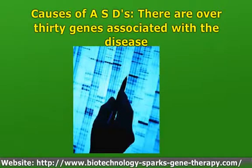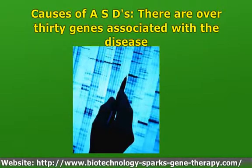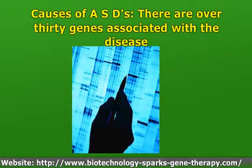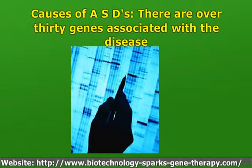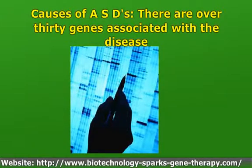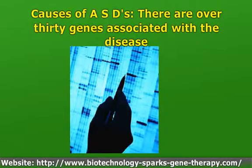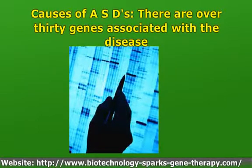Fragile X syndrome is a genetic condition in which three letters of the genetic code are repeated on a fragile area of the X chromosome. The repeats involve the FMR1 gene, which codes for a protein called Fragile X mental retardation protein (FMRP). 1 to 3% of children with autism have Fragile X syndrome. Prader-Willi/Angelman syndrome genes are deleted on chromosome 15, making it the most commonly observed chromosome abnormality in people with ASDs. Rett syndrome is caused by mutations in the MECP2 gene, located on the X chromosome.